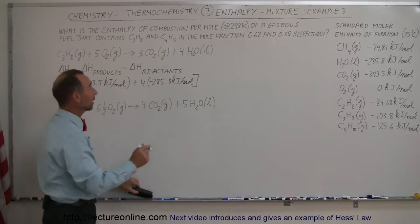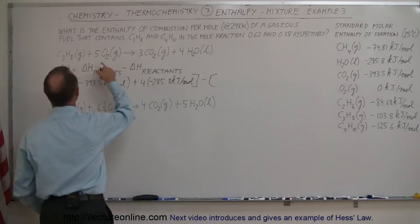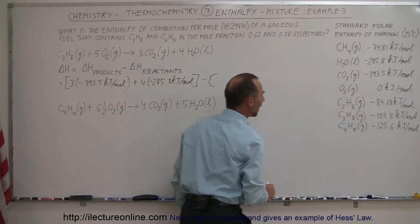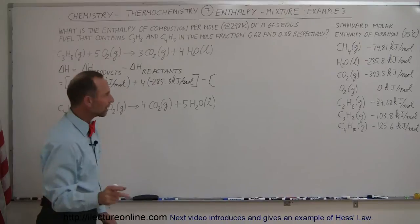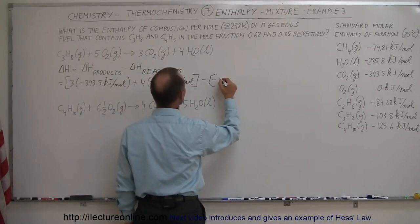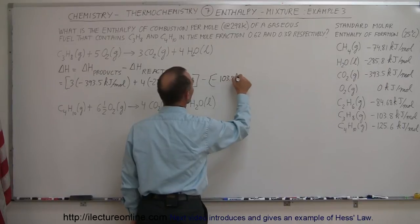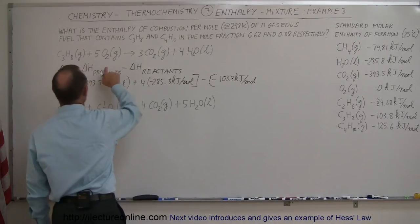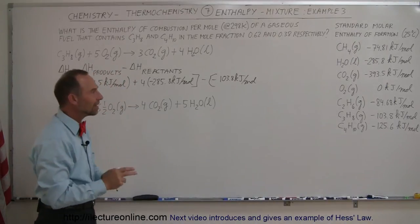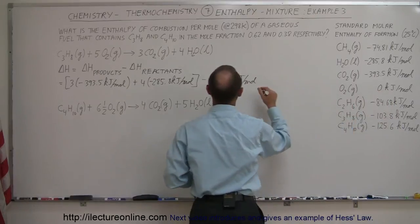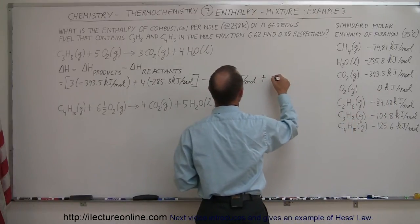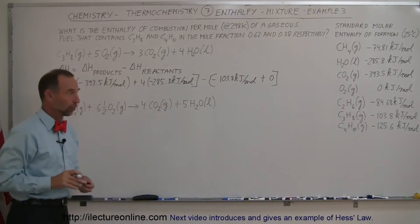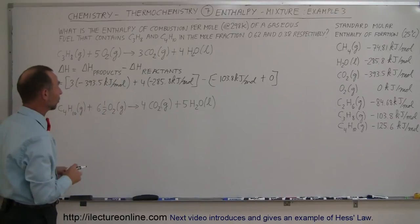Now from that we subtract the enthalpy change of the reactants. We start with propane: it's minus 103.8, but we're subtracting it, so the negative cancels the negative and we get plus 103.8 kilojoules per mole. Notice there's only one mole of propane in this reaction. Plus oxygen — since oxygen is in its base state, it does not produce any enthalpy change, so plus zero. That would be the total for this molar reaction.